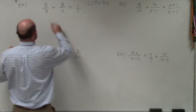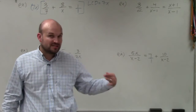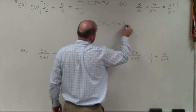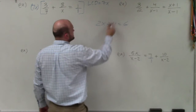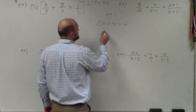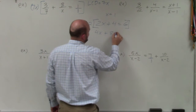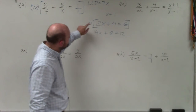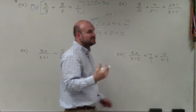What you do is take your LCD and multiply it by your whole equation. As long as you're multiplying the whole equation, you're producing equivalent equations. For example, if I had 2x plus 4 equals 6, the answer is x equals 1. If I multiplied everything by 2, I'd get 4x plus 8 equals 12, and my solution is still 1. So as long as you multiply every single term by a multiplier, you're producing equivalent equations.